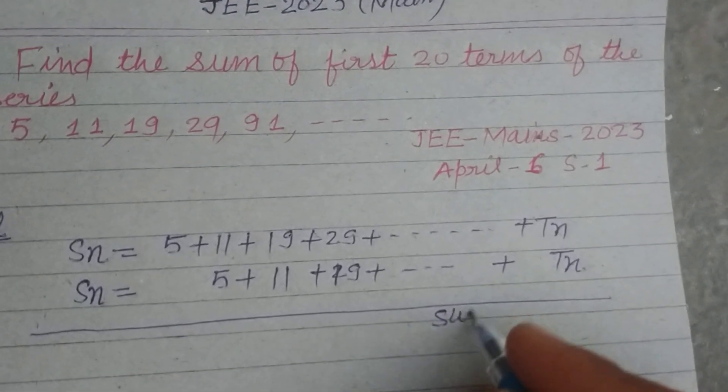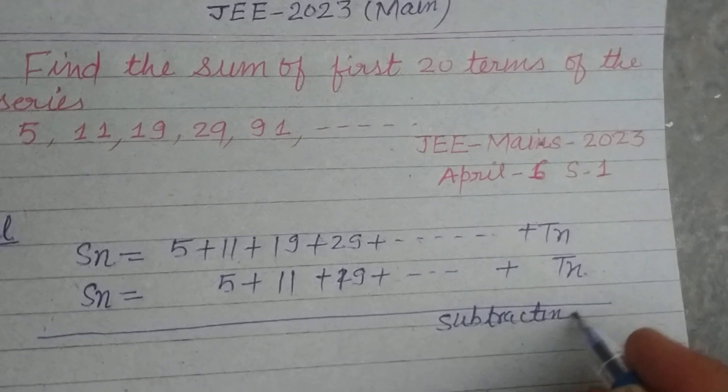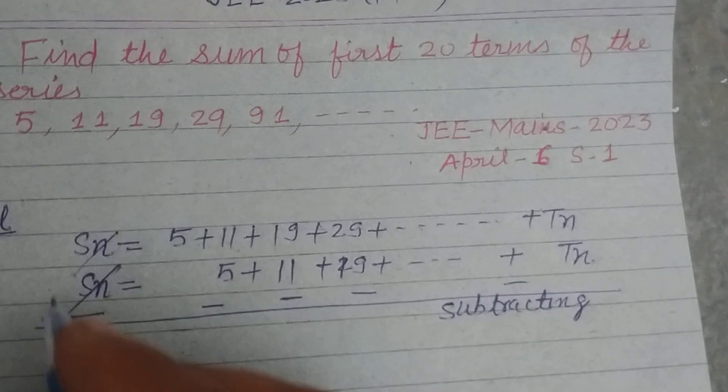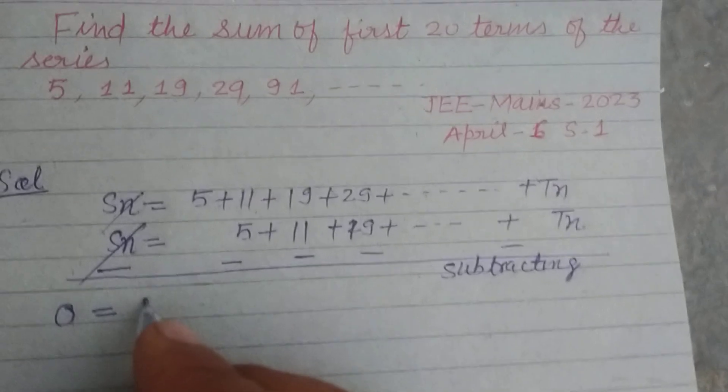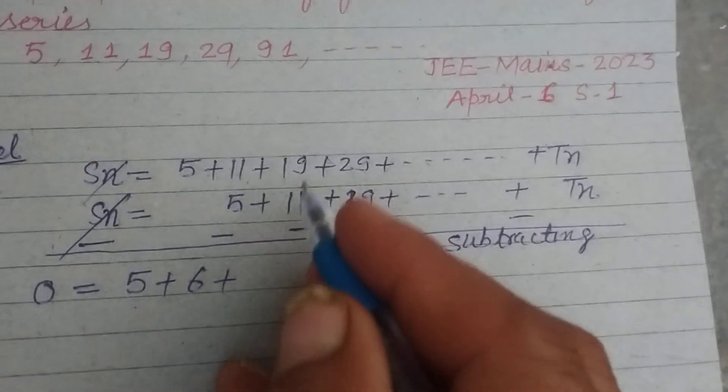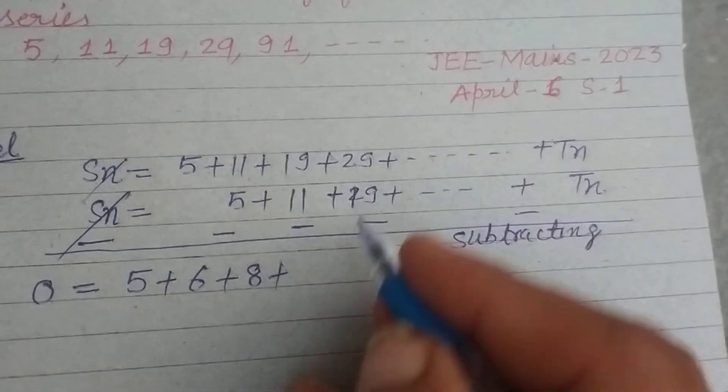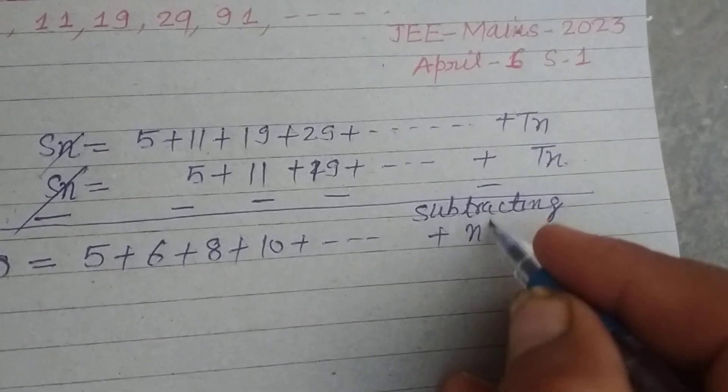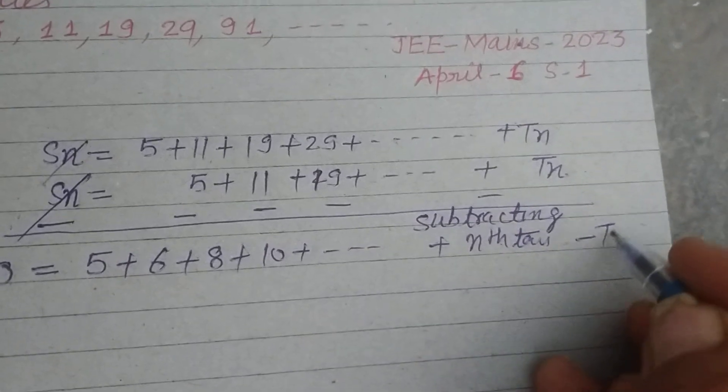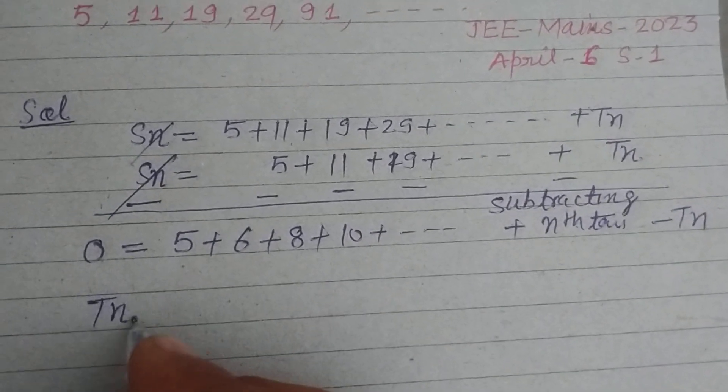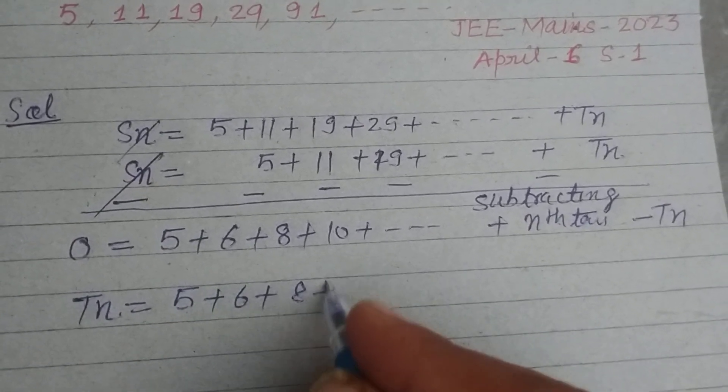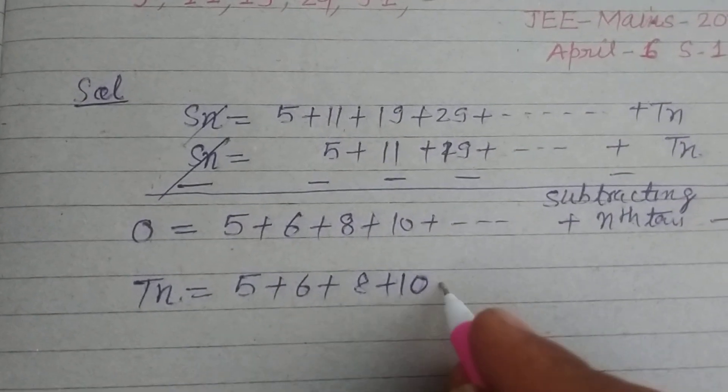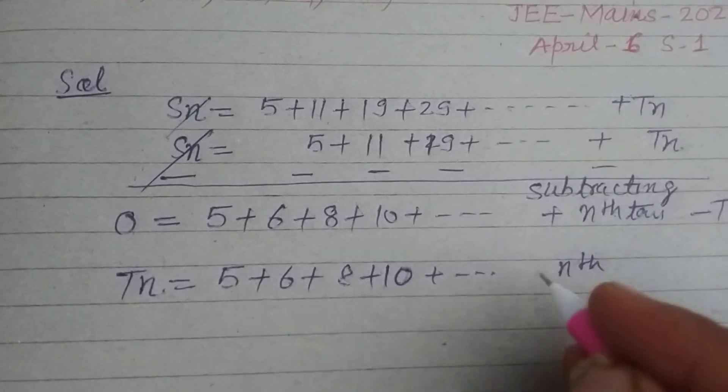Now subtracting this, minus minus minus and so on. So this cancels out. We got 0 here. This is 5, 11 minus 5 is 6, 19 minus 11 is 8, and 29 minus 19 is 10 plus and so on up to Nth term minus TN. So TN equals 5 plus 6 plus 8 plus 10 and so on up to Nth term.